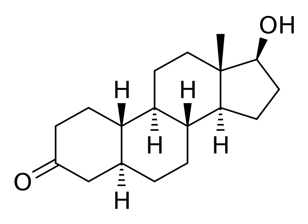5-alpha-dihydronadrolone, also known as 5-alpha-DHN, dihydronadrolone, DHN, 5-alpha-dihydro-19-nortestosterone, or 5-alpha-estran-17-beta-ol-3-one, is a naturally occurring anabolic androgenic steroid (AAS) and a 5-alpha-reduced derivative of nandrolone (19-nortestosterone).